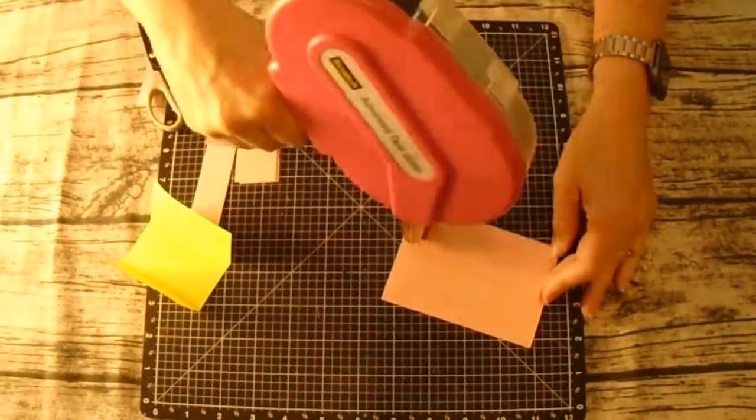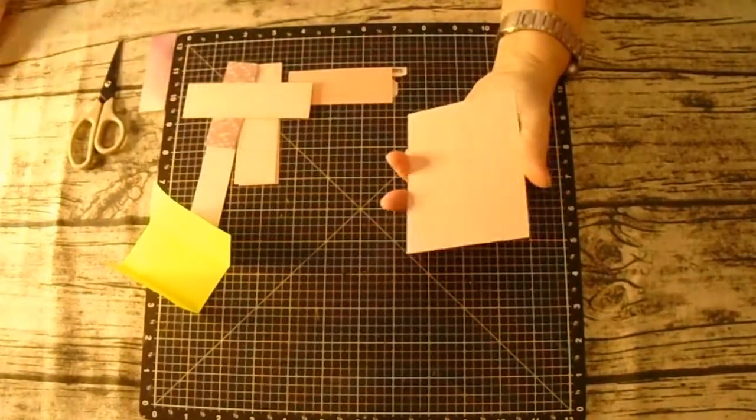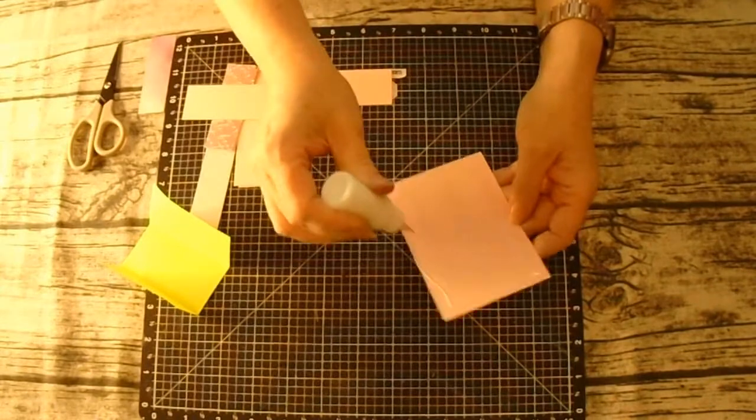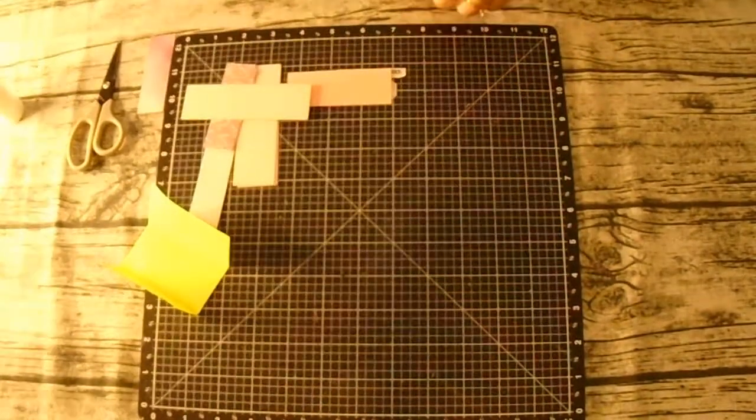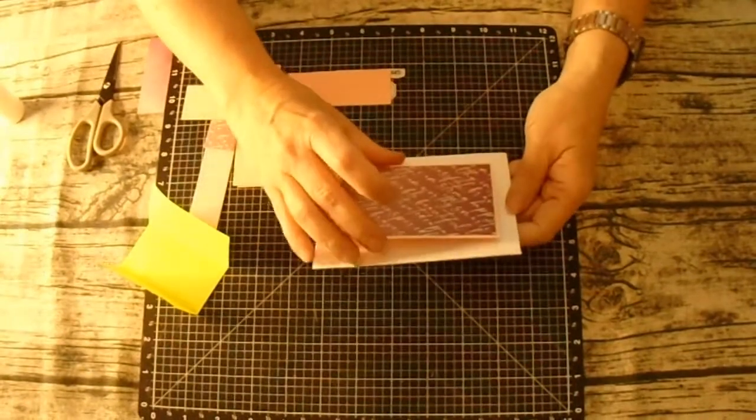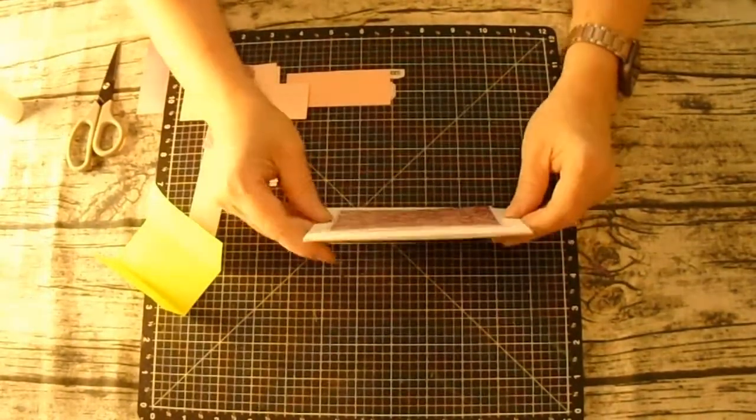Next I'll take the group that I just put together and I'll add it to the base of the card. This paper is so pretty. I'll grab that next section.